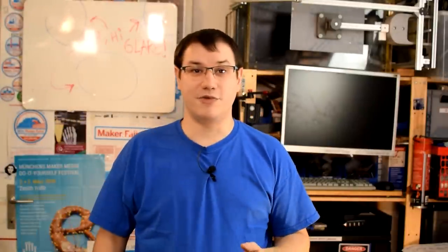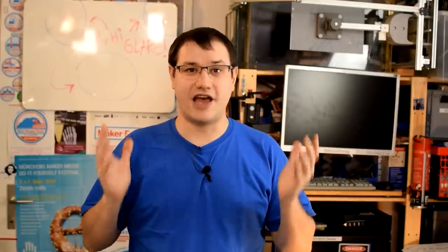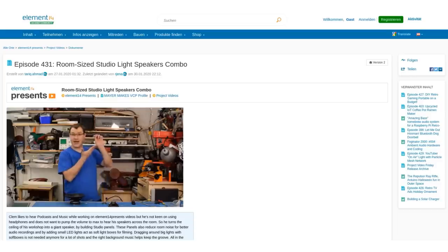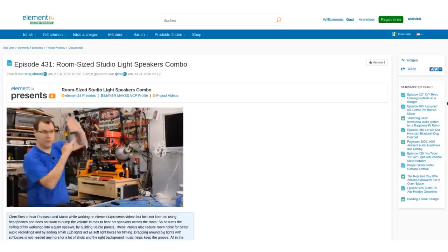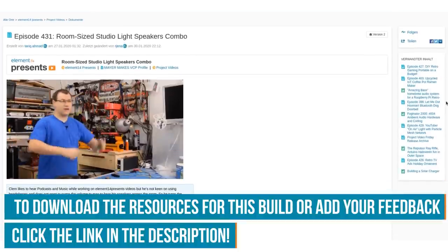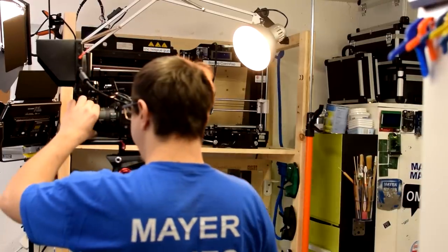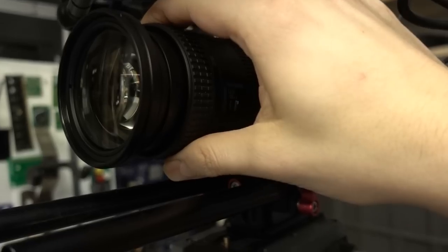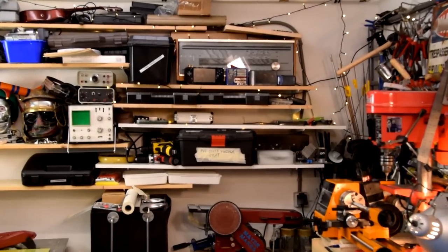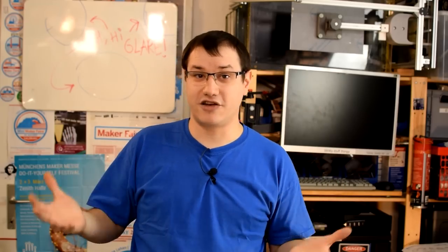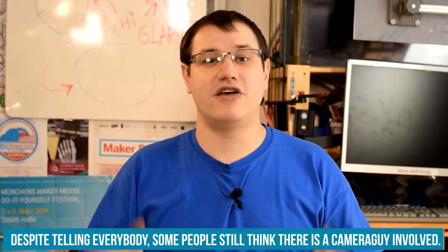Welcome back to Element 14 Presents. I'm Clem and in this episode, we are going to tackle another filmmaking problem. Since you liked my studio ceiling lights, I decided, why not build another filmmaking hack? As you saw in the intro, I often have the problem that I have to go back and forth between where I'm at as a subject in the frame and as the cameraman because I'm filming everything on my own. So that gets very tedious, very fast.